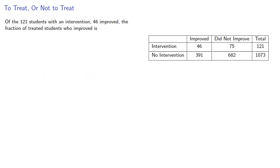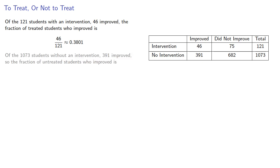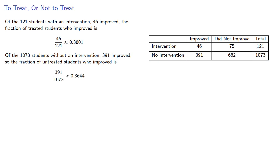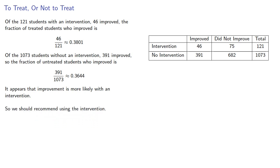Of the 121 students with an intervention, 46 improved. Of the 1073 students without an intervention, 391 improved. So the fraction of untreated students who improved is about 36%. And so it appears that improvement is more likely with an intervention, and so we should recommend using the intervention.